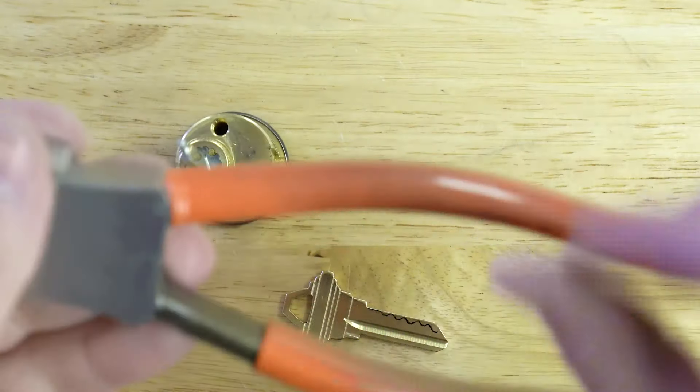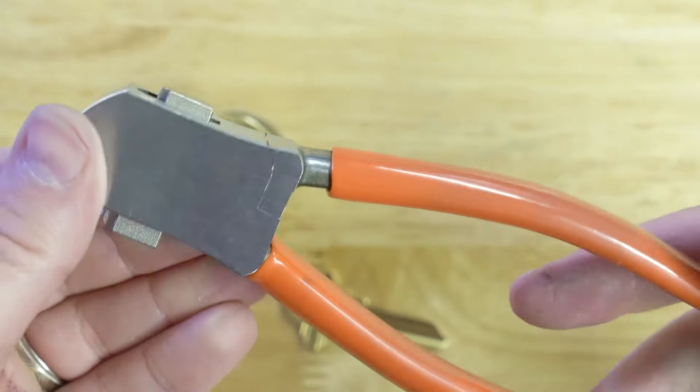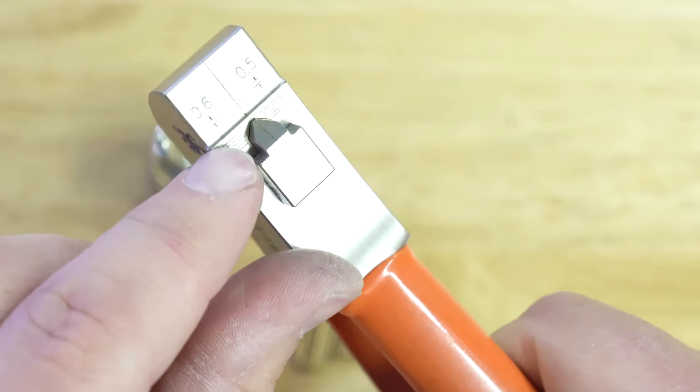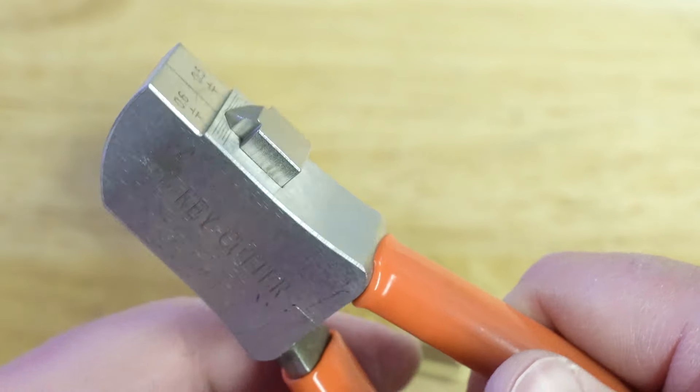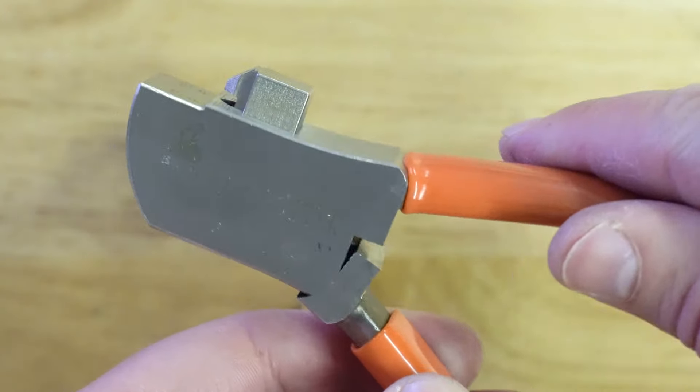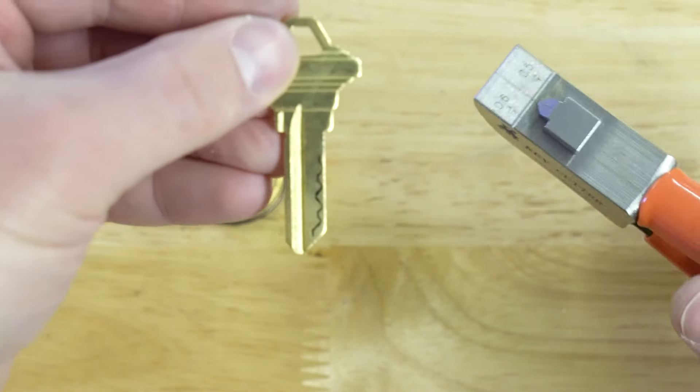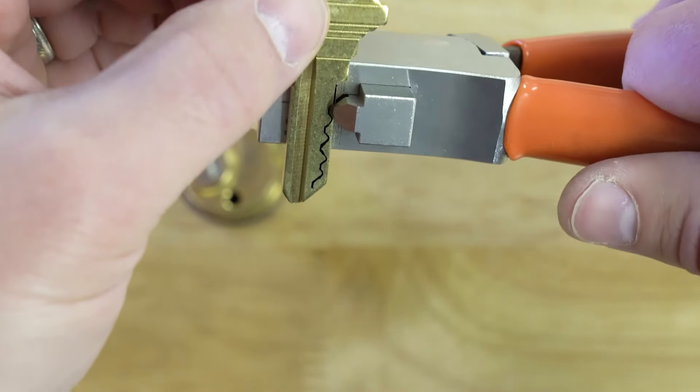We're going to use this Lishi cutter. It's essentially a pair of pliers that cuts a key at the end of it. Here's the little cutter. There's some different lines on it. It's a pretty handy little tool and you just open and close and it punches out the key. So what we're going to do is bring this key up and start cutting each one of these depths.